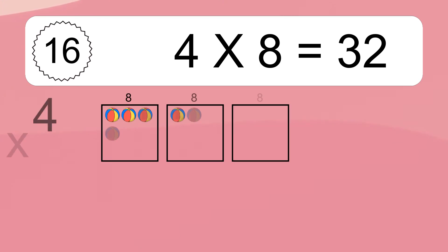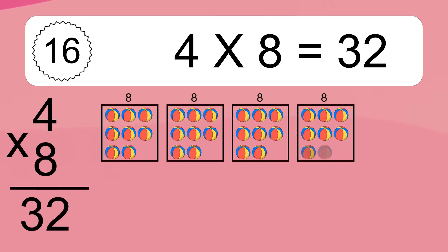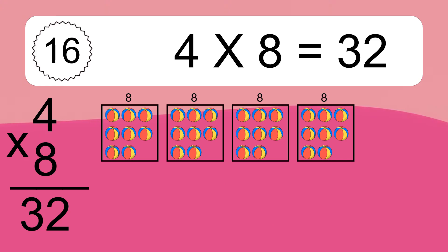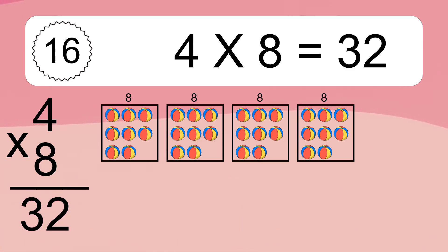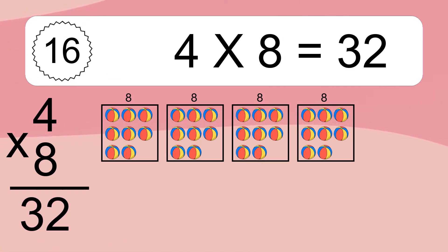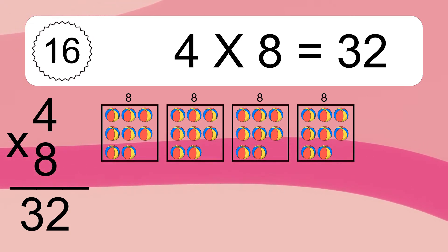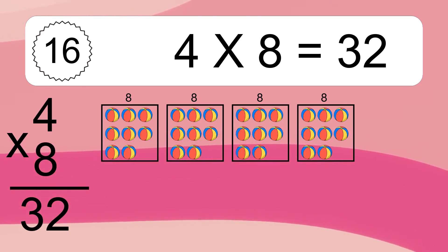4 times 8 equals what? 4 times 8 equals 32. We have 4 boxes, and each box has 8 colorful balls inside. If you count all the balls in all the boxes together, you will have 4 times 8 balls. This equals 32 balls.